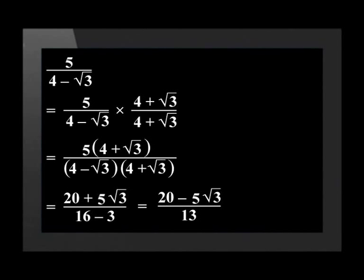We cannot simplify the numerator without a calculator, but the bottom becomes 13. This means that our final answer is 20 minus 5 times the square root of 3 divided by 13.